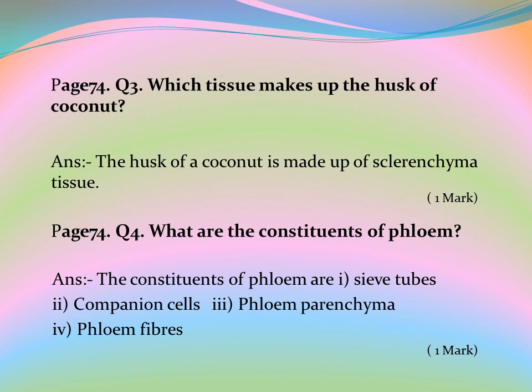Page 74, Question 4: What are the constituents of phloem? Answer: The constituents of phloem are sieve tubes, companion cells, phloem parenchyma, and phloem fibers.